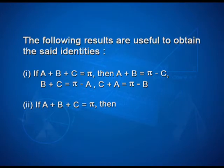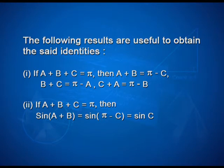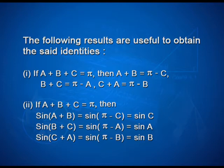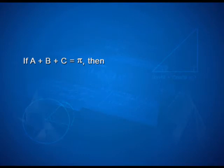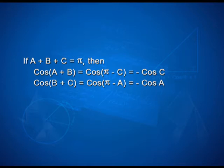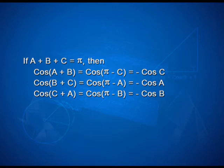Second: if A plus B plus C equals pi, then sin of A plus B equals sin of pi minus C equals sin C, sin of B plus C equals sin of pi minus A equals sin A, and sin of C plus A equals sin of pi minus B equals sin B. Also, cos of A plus B equals cos of pi minus C equals minus cos C; cos of B plus C equals minus cos A; cos of C plus A equals minus cos B.